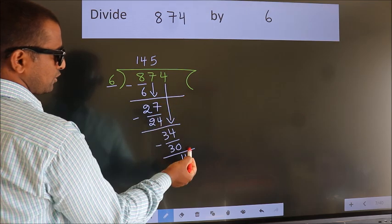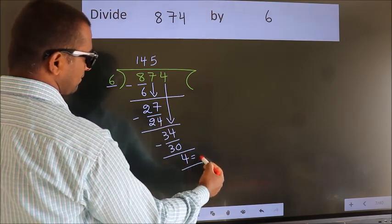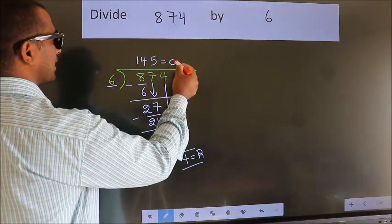No more numbers to bring it down. So we stop here. This is our remainder. This is our quotient.